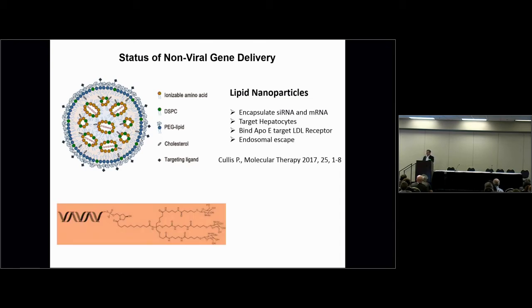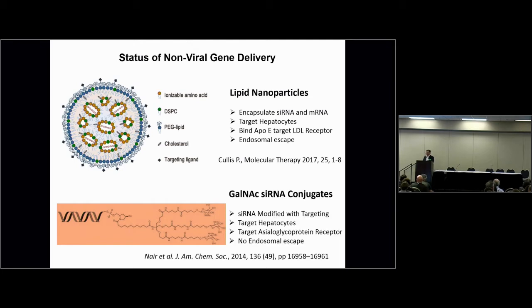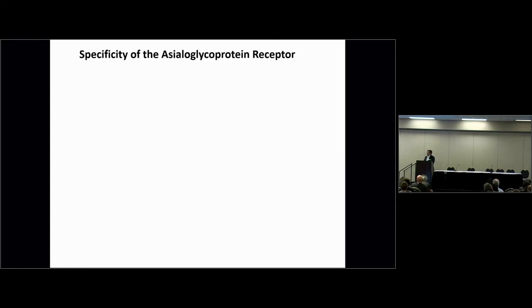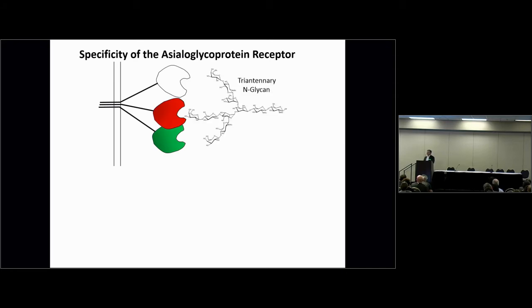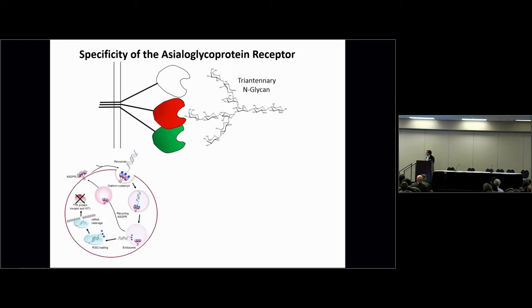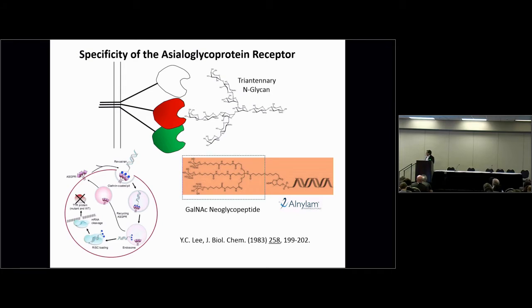Alnylam has done siRNA delivery with lipid nanoparticles, but has now turned to molecular conjugates such as GalNAc-siRNA conjugates, recognizing LNP limitations. These conjugates are modified with a targeting ligand — a direct conjugate of an RNAi to a targeting ligand that targets the asialoglycoprotein receptor on hepatocytes. However, they suffer from reduced potency due to lack of an endosomal escape mechanism. The asialoglycoprotein receptor is a trimeric receptor in the liver that binds an N-glycan ligand. Alnylam's drug is currently in phase two clinical trial. The targeting moiety — a GalNAc neoglycopeptide — was developed in the 1980s by my former advisor at Johns Hopkins. It's really fulfilling to see it now in a phase two clinical trial for targeting RNAi.